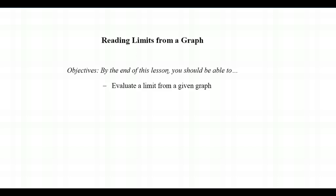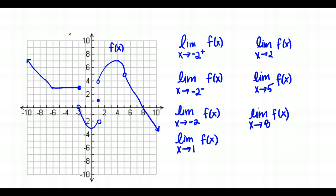Reading limits from a graph. Let's start by taking a look at this first example. We have this function f of X, a piecewise function, and we're asked to evaluate the following limits. The first limit is as X approaches negative 2 from the right side. As we approach from the right side of negative 2, the Y values are getting closer and closer to 0.